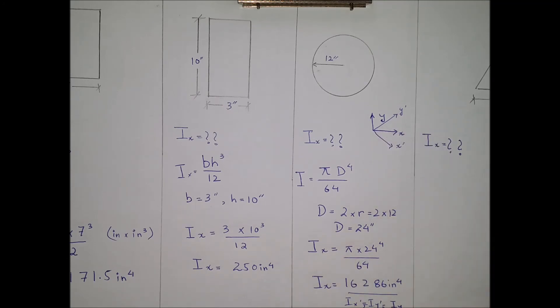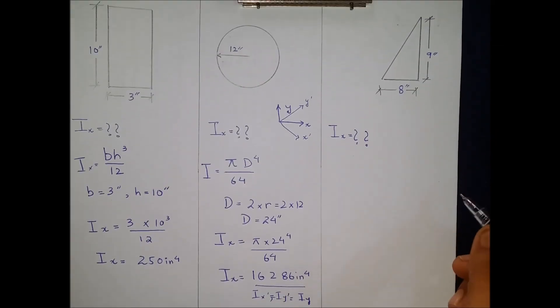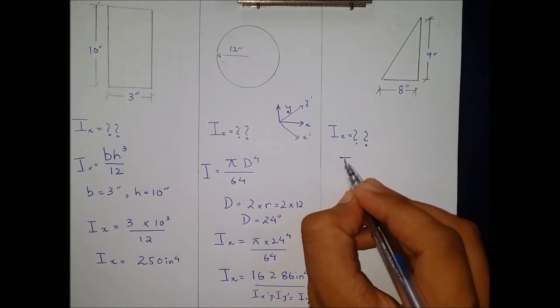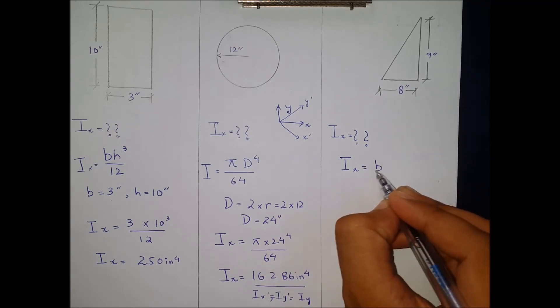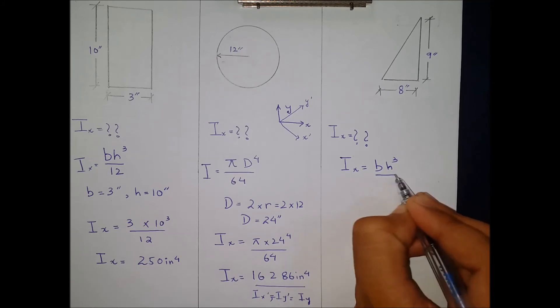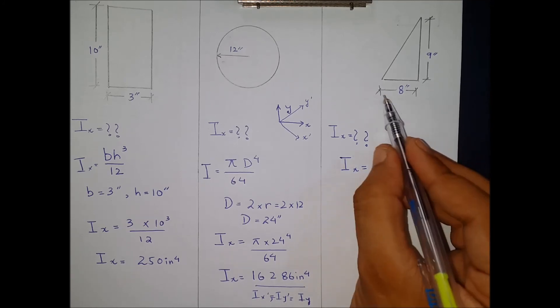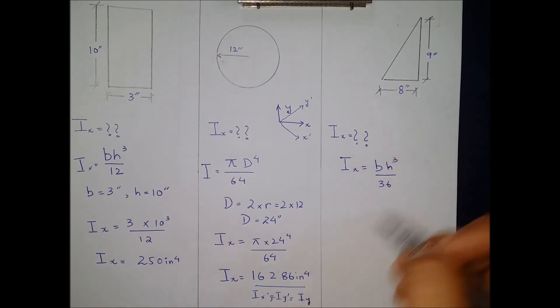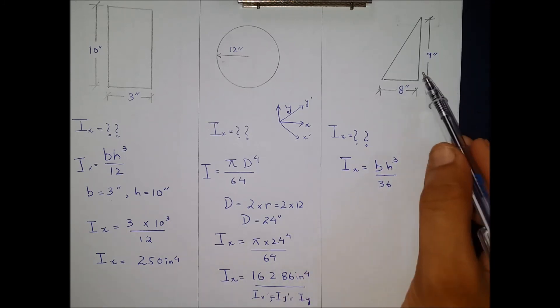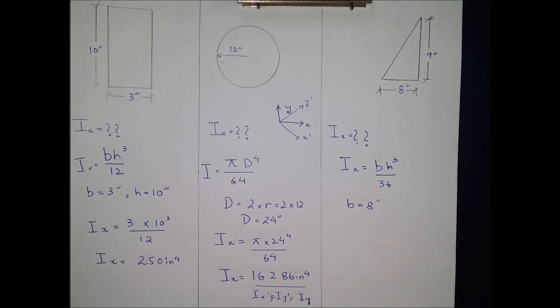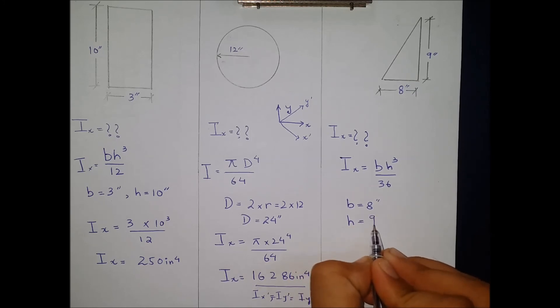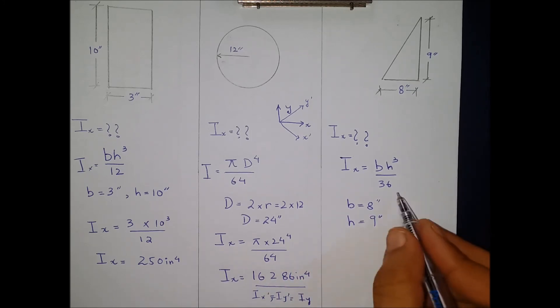Starting with the third example of moment of inertia, which is a triangle shape. You know that for a triangular shape, as discussed in previous videos, the moment of inertia formula is bh³ over 36, where b is the base, here given as 8 inches, and height h is given as 9 inches. We know that b equals 8 inches and height is 9 inches. Substituting these values in the formula for triangle...